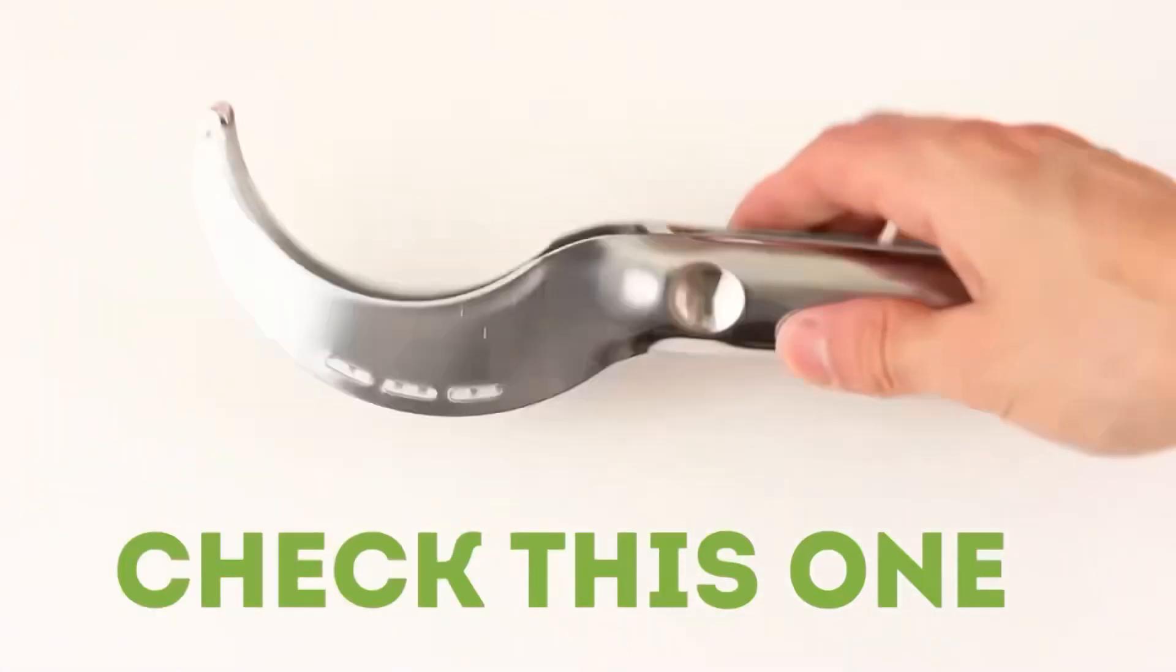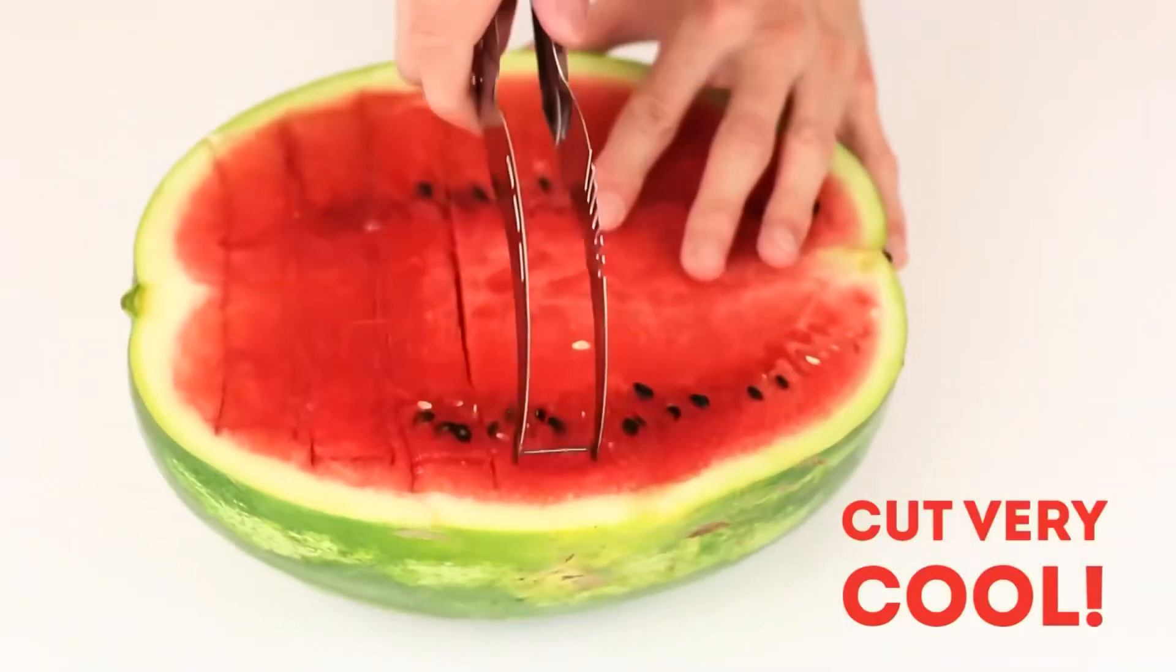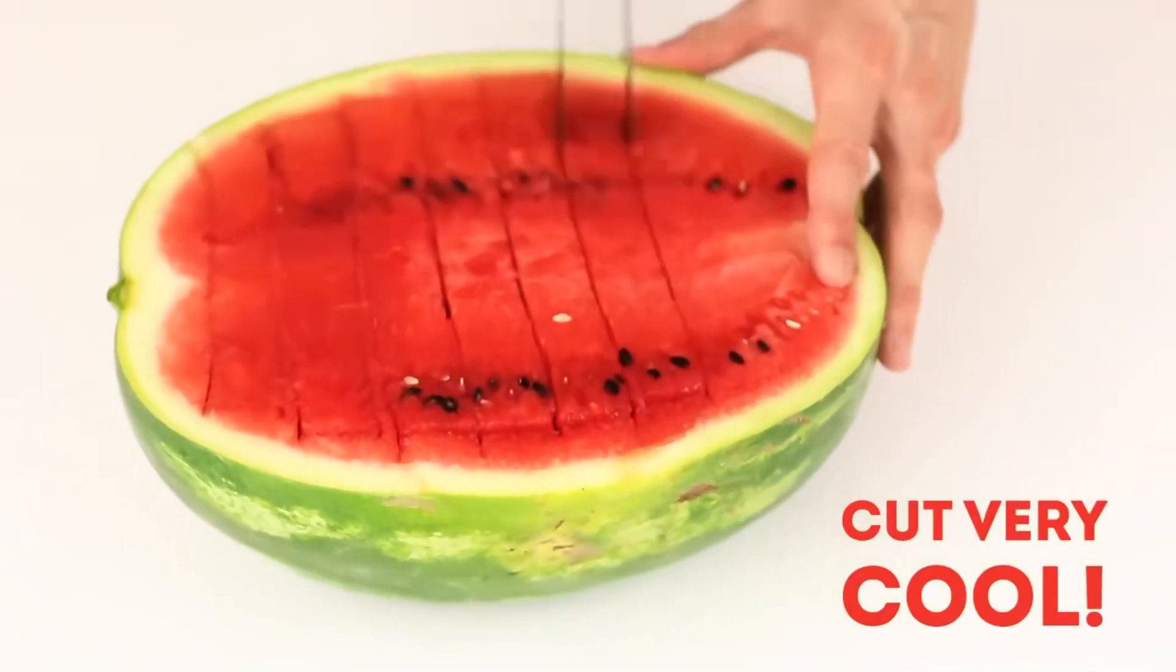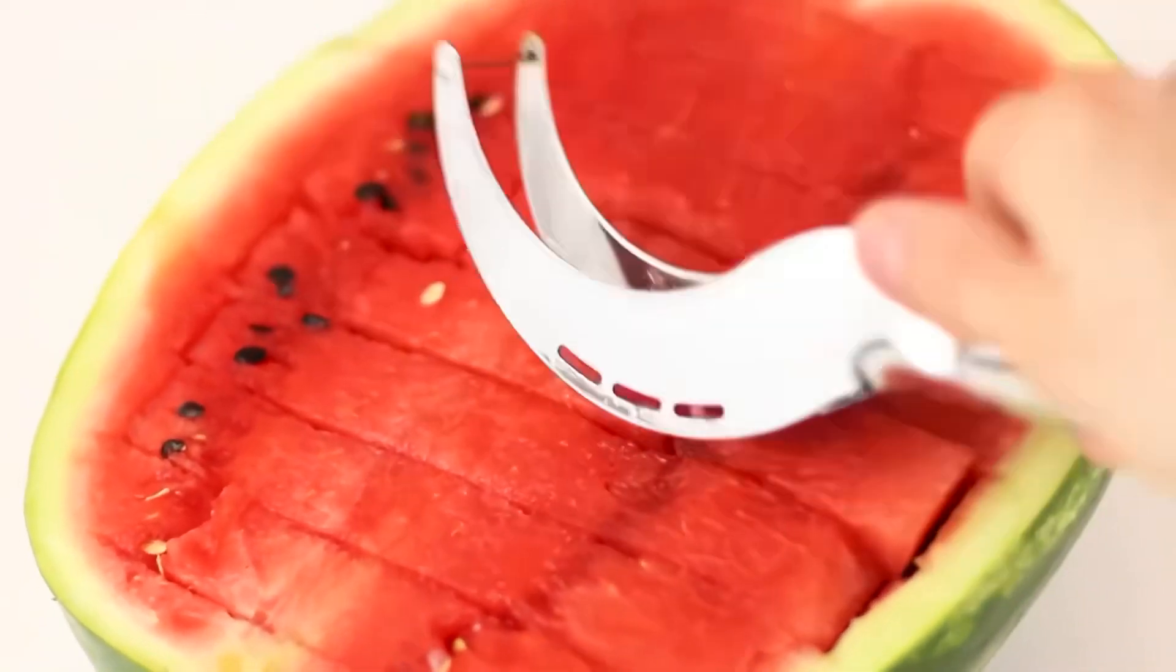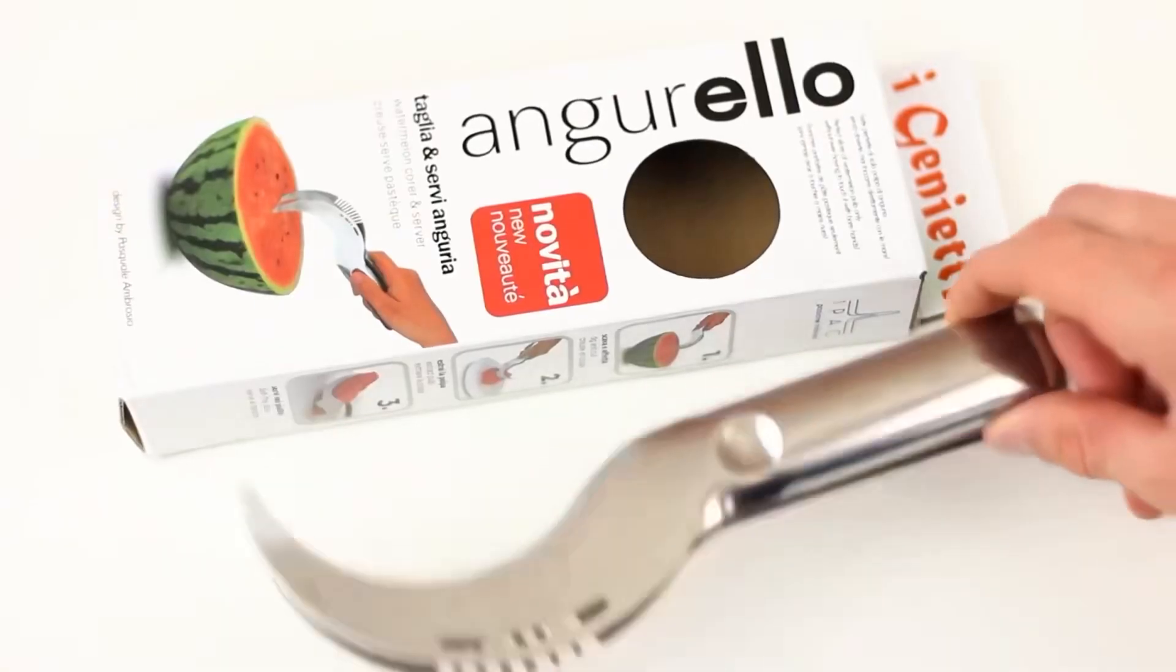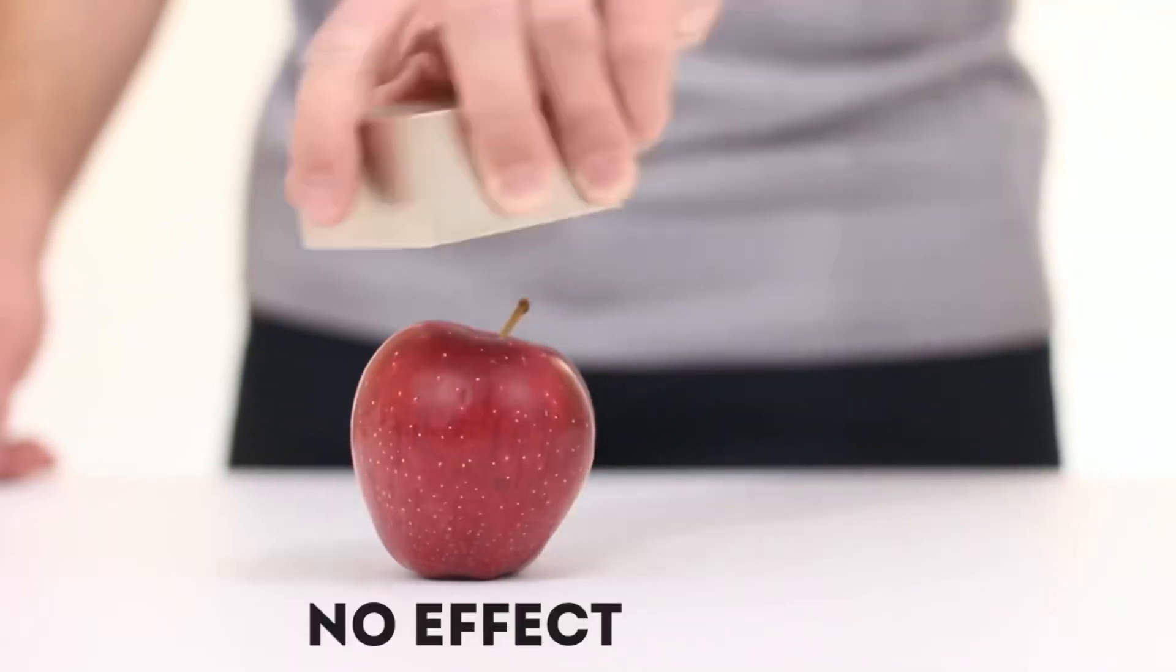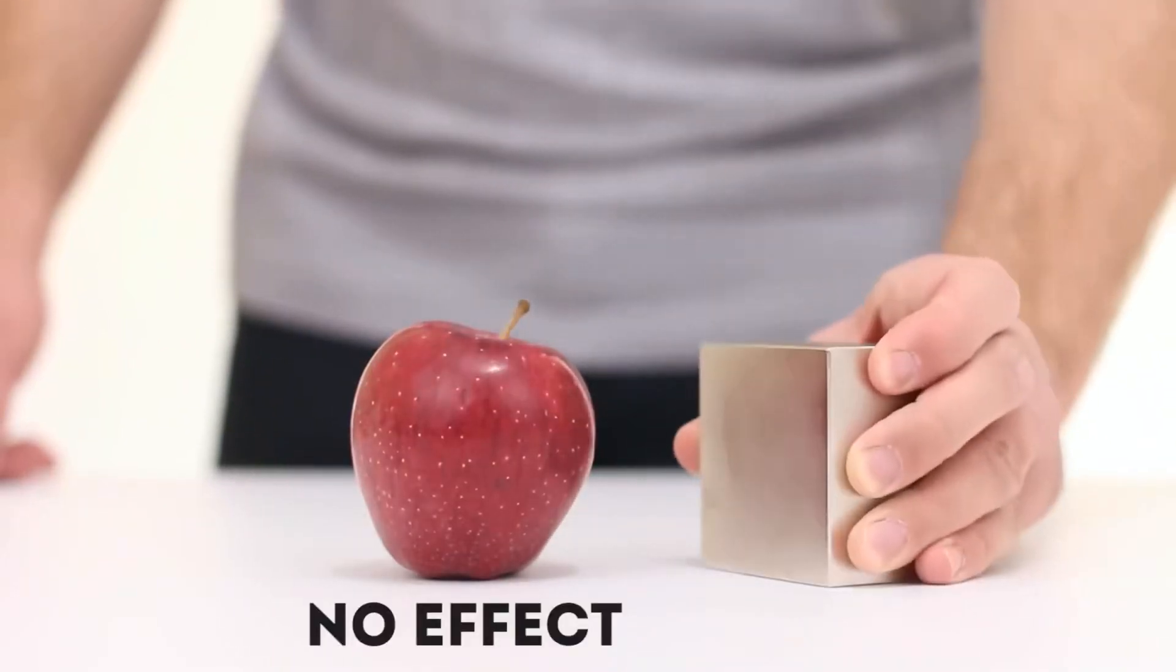And finally, another special knife for slicing watermelon. Let's take half a watermelon and just draw this knife across the pulp. These are the neat semi-circular pieces of watermelon we got.